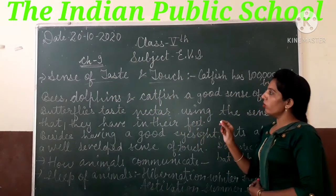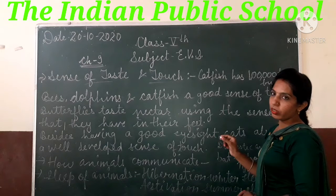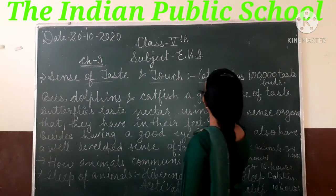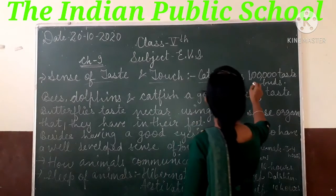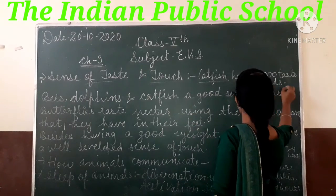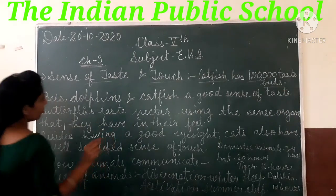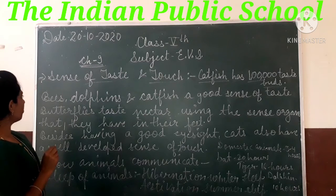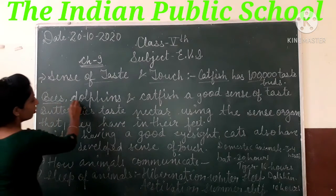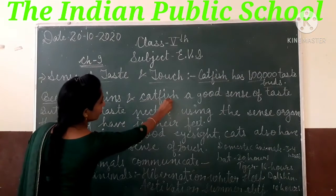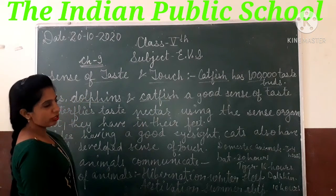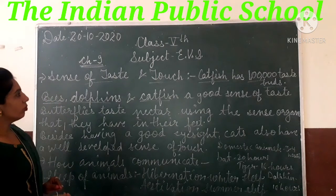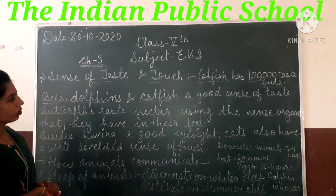आज हम taste और touch जो sense है animals में उनके बारे में read करेंगे। Catfish के body में one lakh taste buds होती है। Bees, dolphins, and catfish में बहुत अच्छी taste की sense होती है।